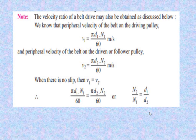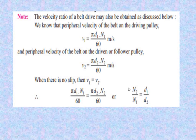Note: The velocity ratio of a belt drive may also be obtained by considering peripheral velocity. The peripheral velocity of the belt on the driving pulley is V1 = π × D1 × N1 / 60 m/s, and on the driven pulley it is V2 = π × D2 × N2 / 60 m/s. When there is no slip, V1 = V2, so π × D1 × N1 / 60 = π × D2 × N2 / 60. Cancelling π and 60 from both sides gives N2/N1 = D1/D2 — the same formula.